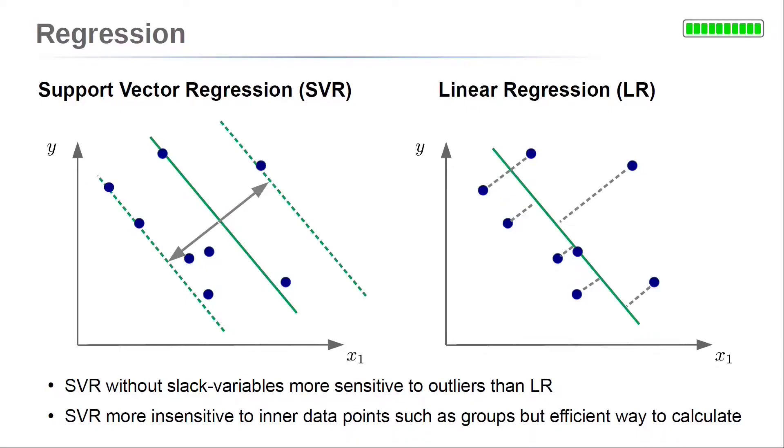Support vector regression and linear regression seem pretty similar. Both have a linear assumption in mind. However, usually support vector regression, at least with hard margins, is pretty sensitive to outliers, because the margin includes even the outliers. This is different than linear regression.